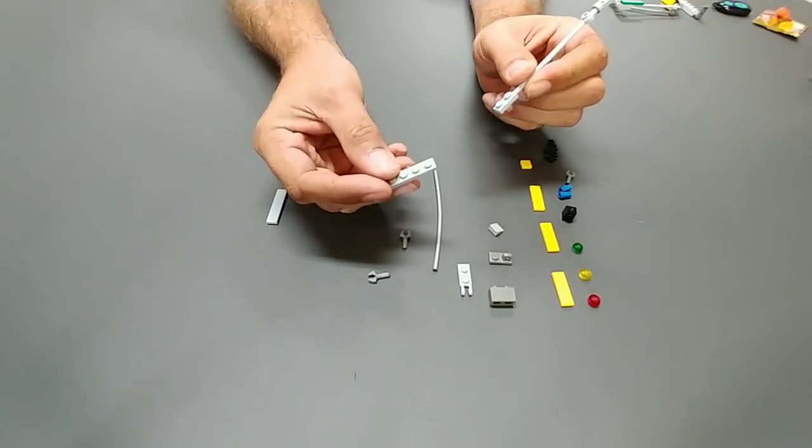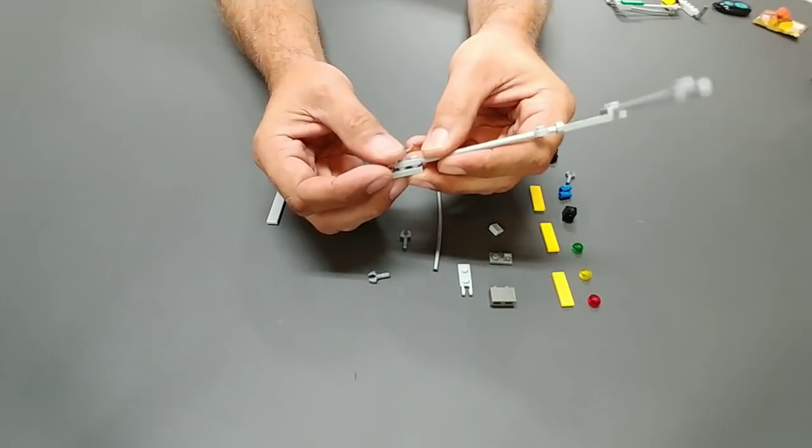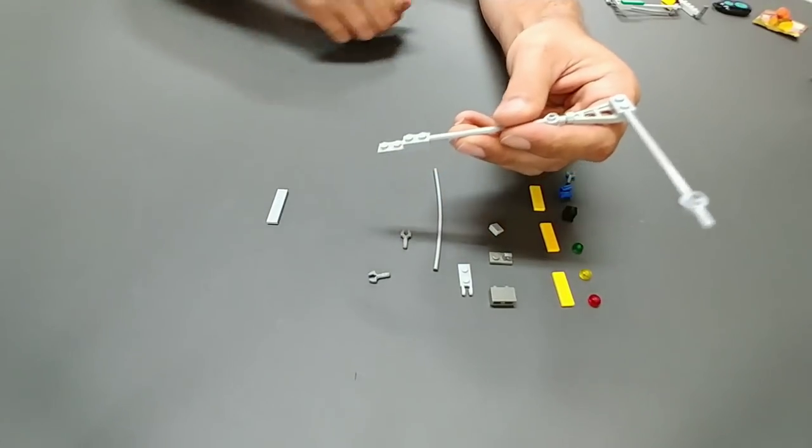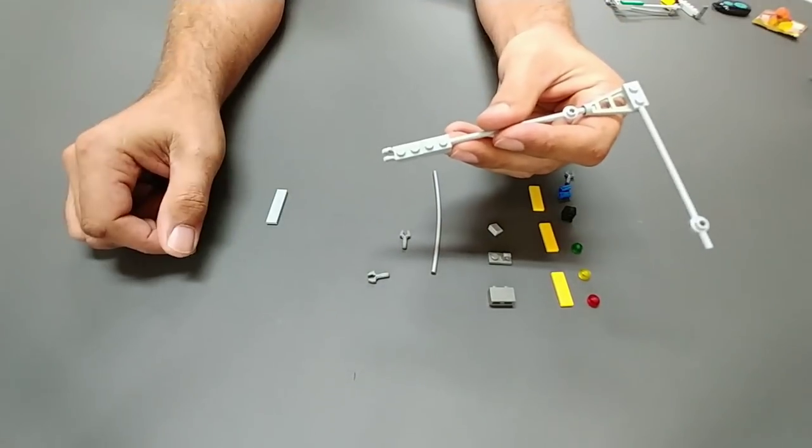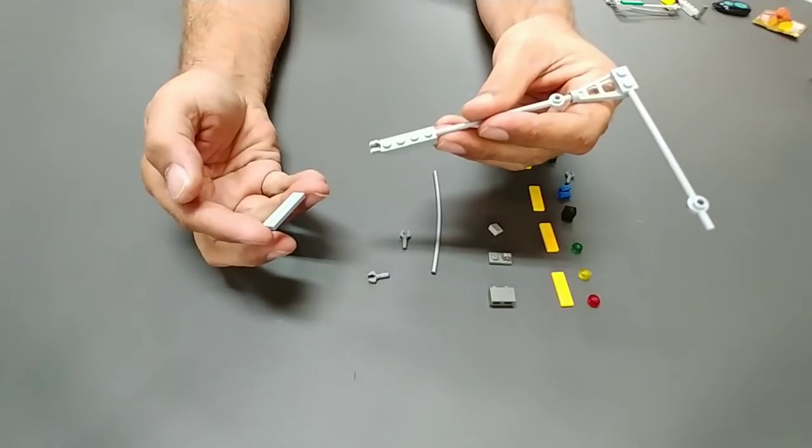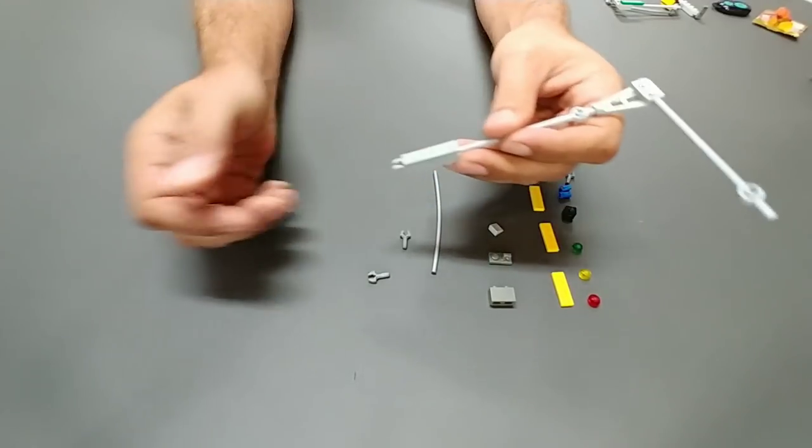And then to give it the base we're going to take our 1x4 plate. Pop that on there. Take this modified 1x4 plate. Put that on there. And then I put this 1x4 tile on top of that.